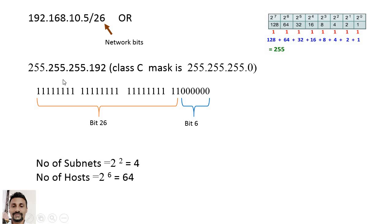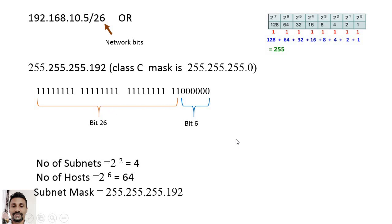To find the subnet mask for this Class C address, we put ones for all network bits to get the network mask: 255.255.255.0. After creating the subnet with 26 bits for the network, we put ones for the network bits and zeros for the host bits, giving us 255.255.255.192 as our subnet mask.